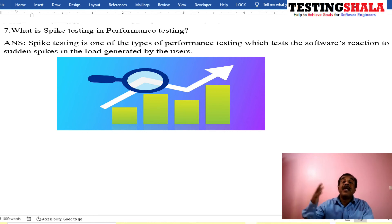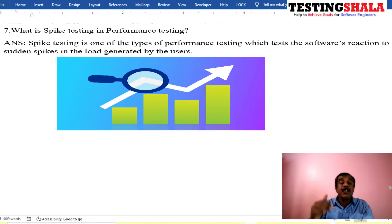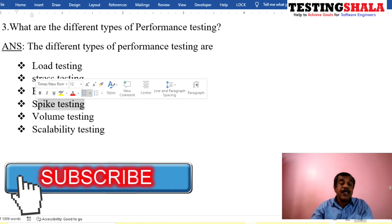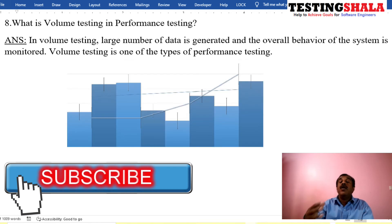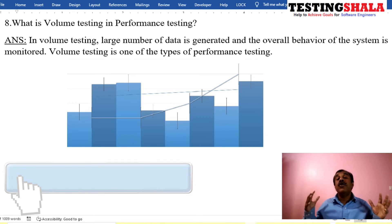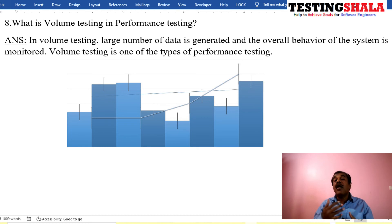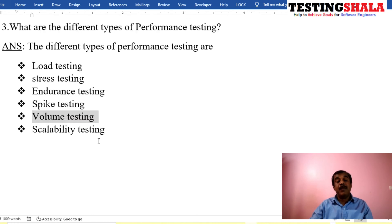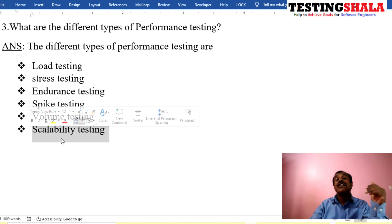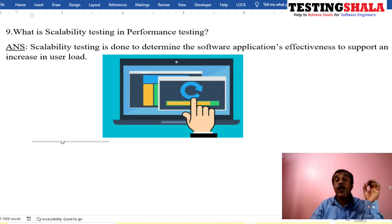Fourth is spike testing — we put the load at a specific time or specific hour and observe how the application behaves at that particular moment. Fifth is volume testing — we pump a huge amount of data into the back end or a huge number of users into the application, just to see how the application behaves as data volume and user volume increase. The last type is scalability testing, which is also a very important aspect of performance testing.